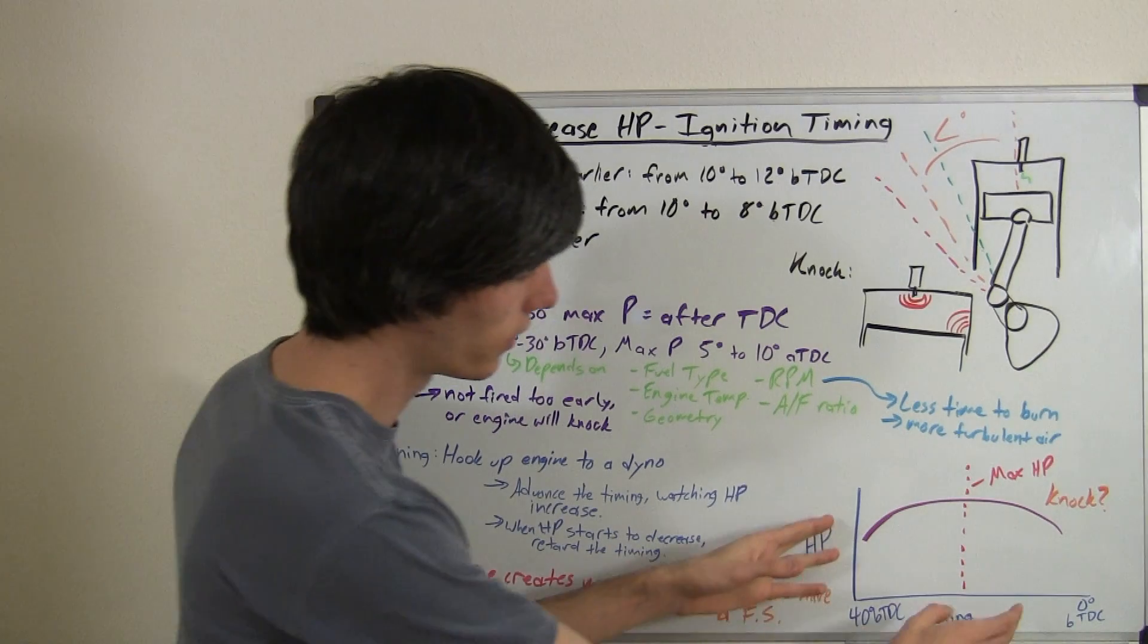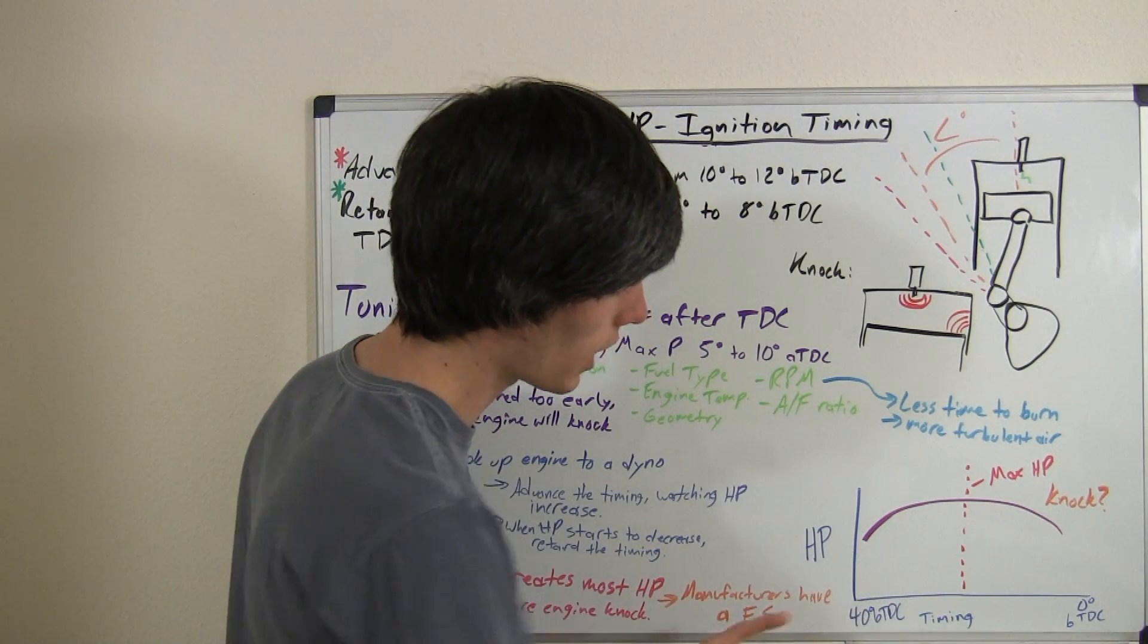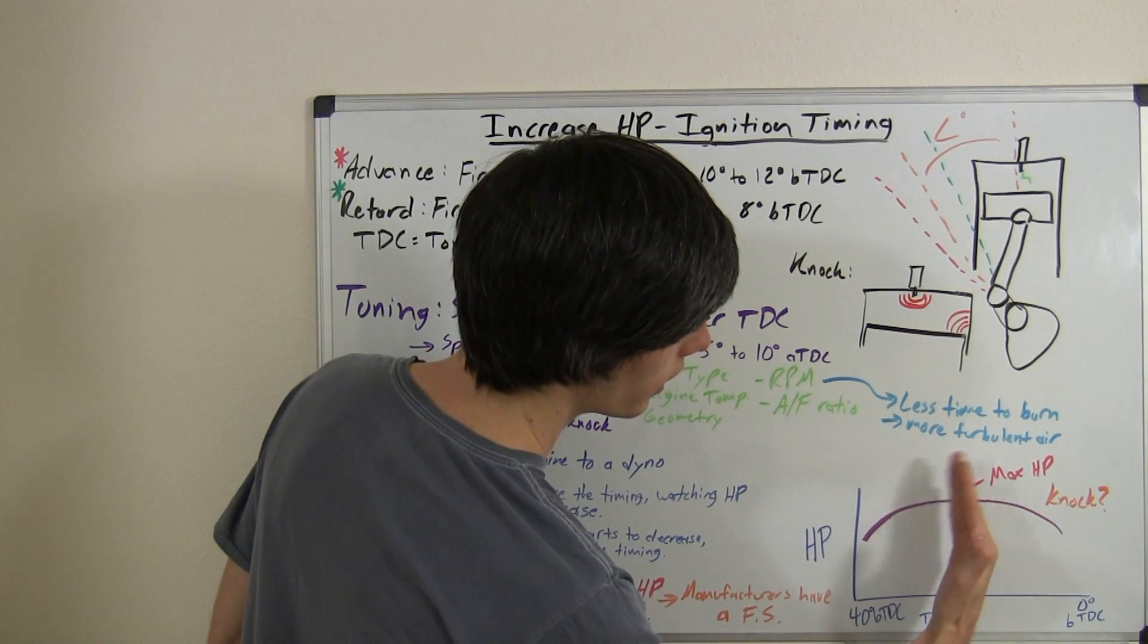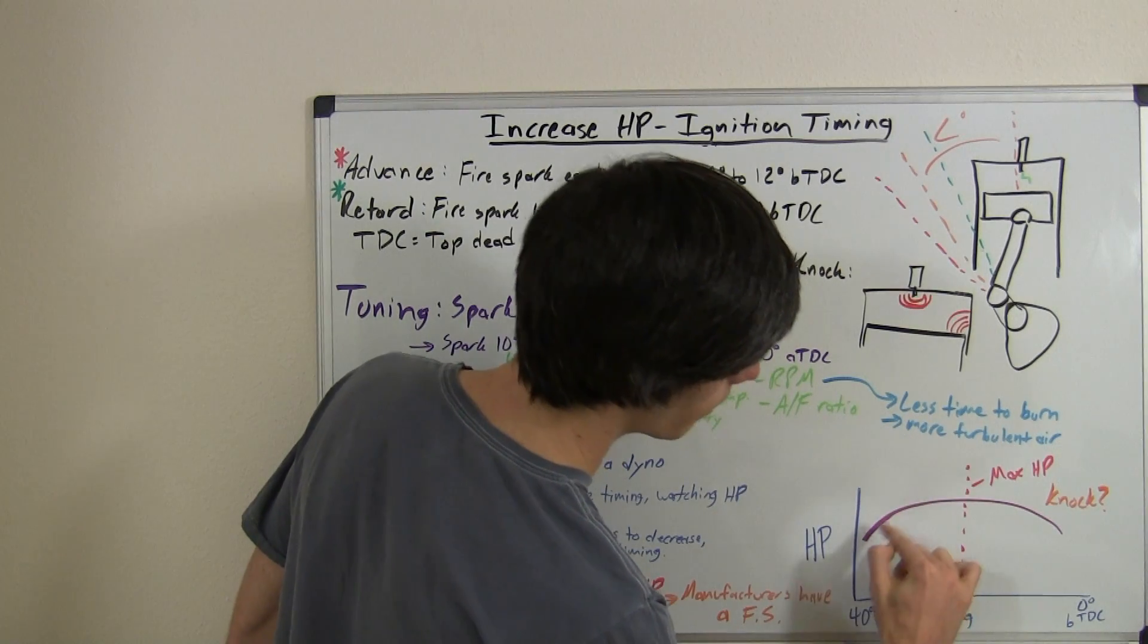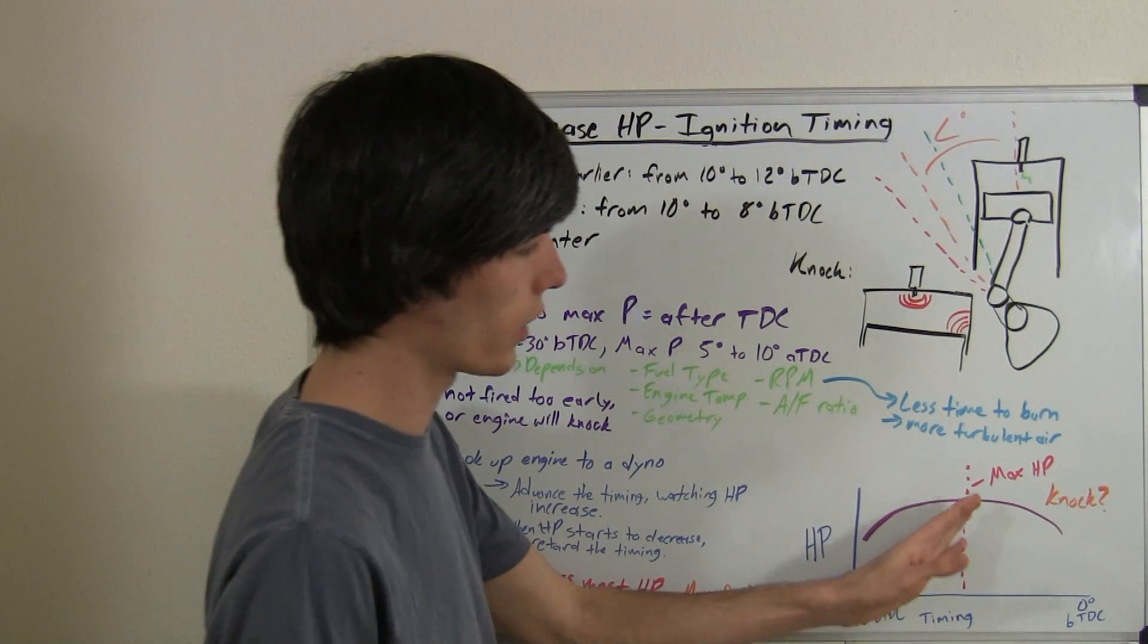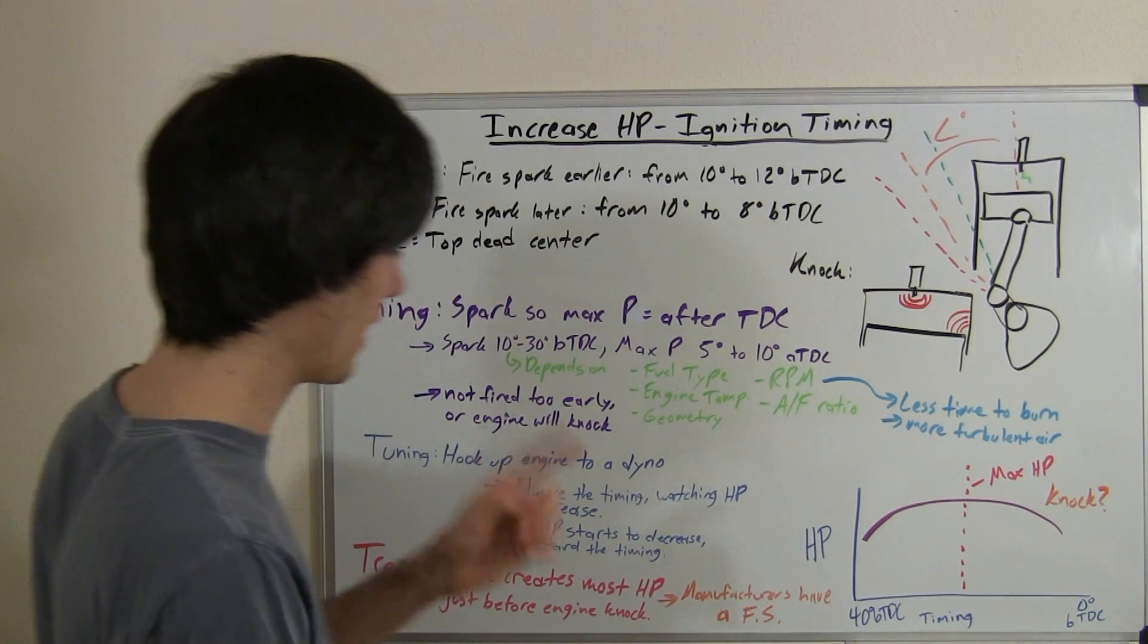So basically, what you're going to have is this curve where you've got horsepower here on the left, you've got timing on the bottom, and what you want to do is change the timing so that you reach the peak of this curve where you have the maximum horsepower, and it's based on timing.